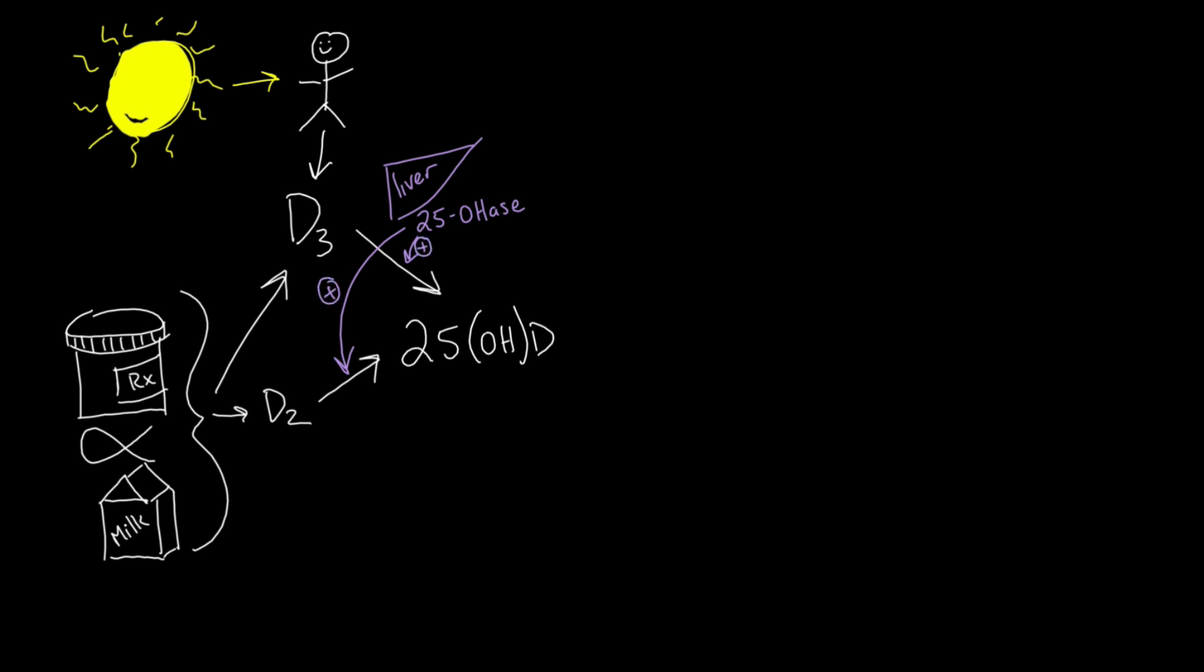The final step in the pathway is when 25-hydroxyvitamin D is converted to the active hormone 1,25-dihydroxyvitamin D, also called calcitriol.